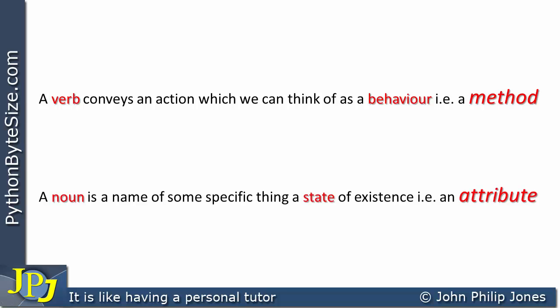A verb conveys an action, which we can think of as a behavior — a method if we're dealing with object-oriented programs. A doing word, an action of some kind, which we group together in a method. A noun is a name of some specific thing, a state of existence — an attribute, or more precisely, a data attribute, often called data fields. It's something that is likely to become a variable within our class.